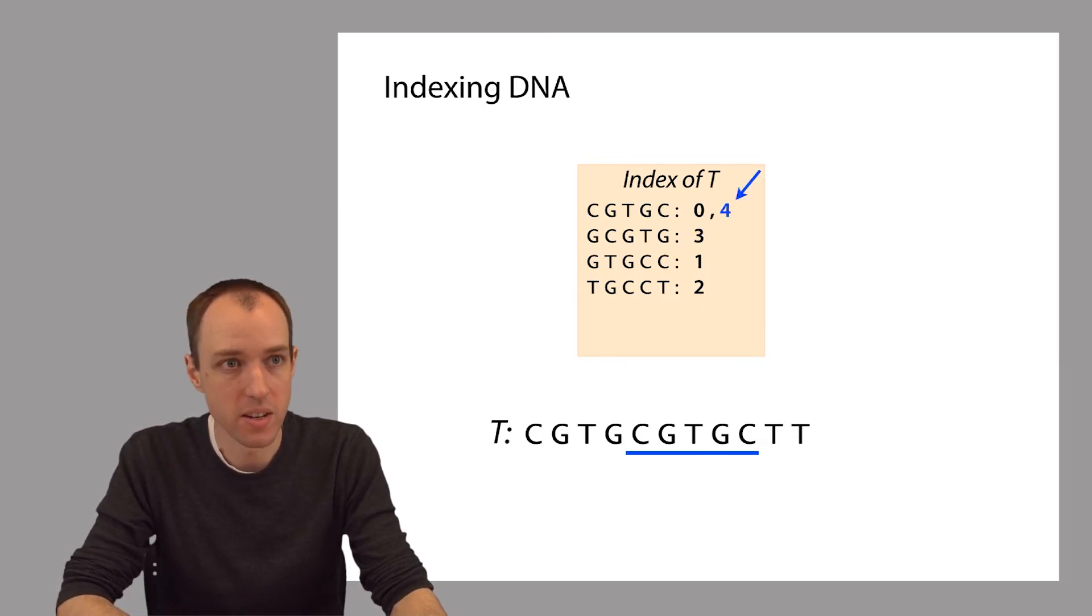Now let's add the next substring of length 5. This substring is one that we've seen before. So instead of adding a new entry into the index, we simply append one more offset onto the list of offsets already associated with this substring. We just add a 4 onto the list that already had the 0 there. Then we continue like this until we've added all the substrings of length 5.